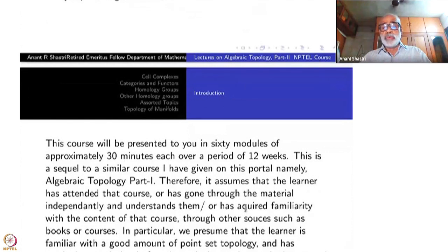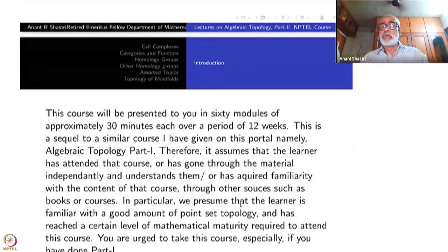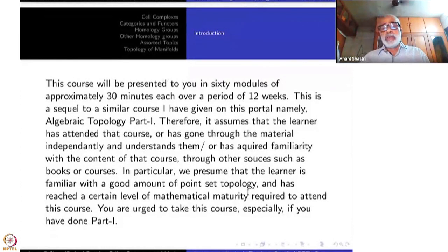Therefore, it assumes that the learner has attended that course or has gone through the material independently and understands them, or has acquired familiarity with the contents of that course through other books or courses. In particular, we presume that the learner is familiar with a good amount of point set topology and has reached a certain level of mathematical maturity required to attend this course. You are urged to take this course, especially if you have done Part 1.